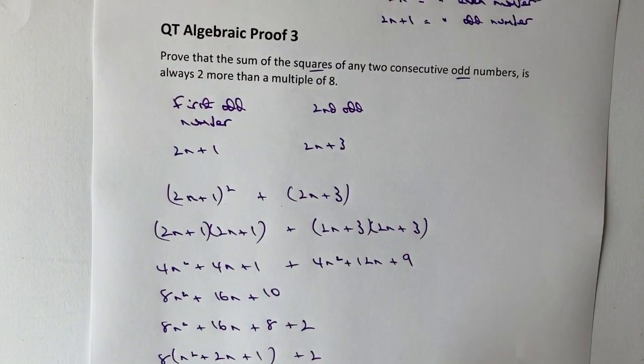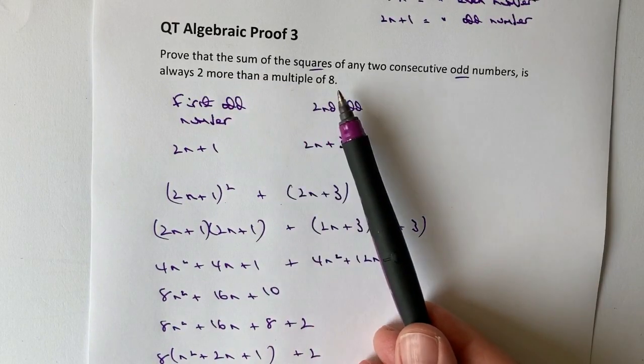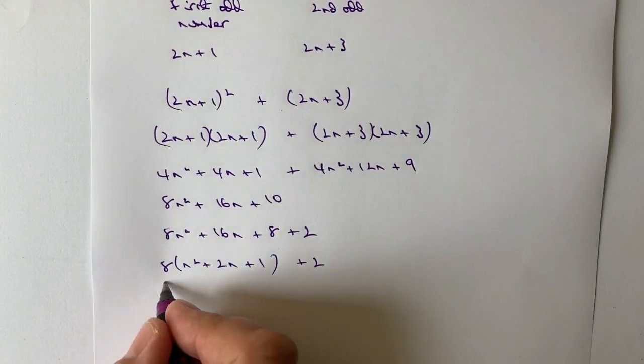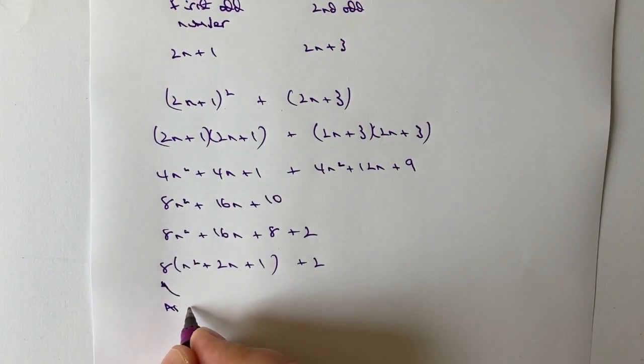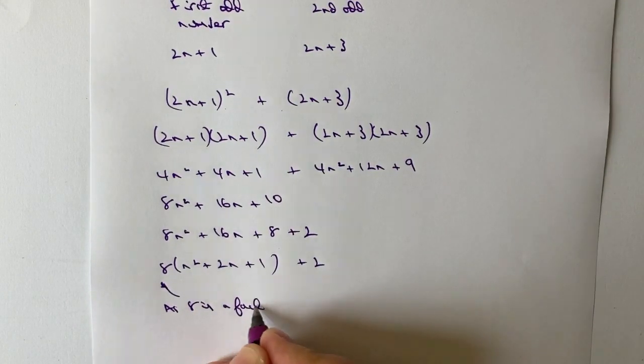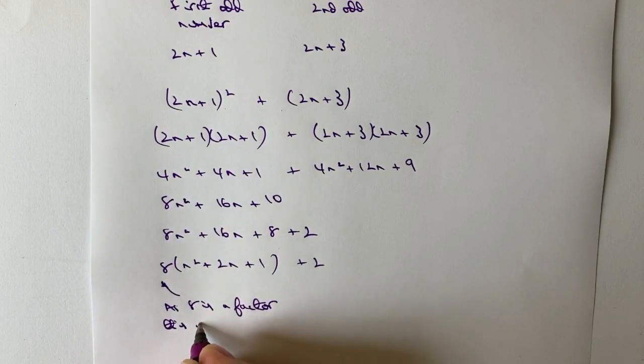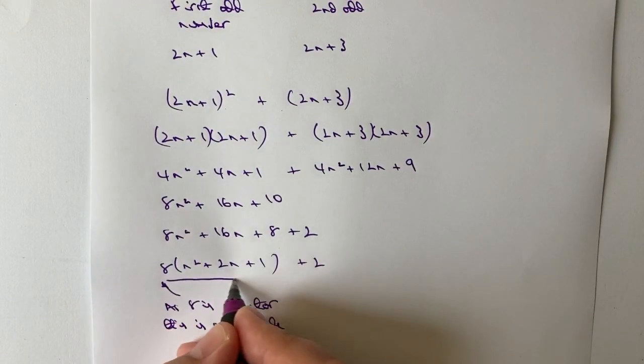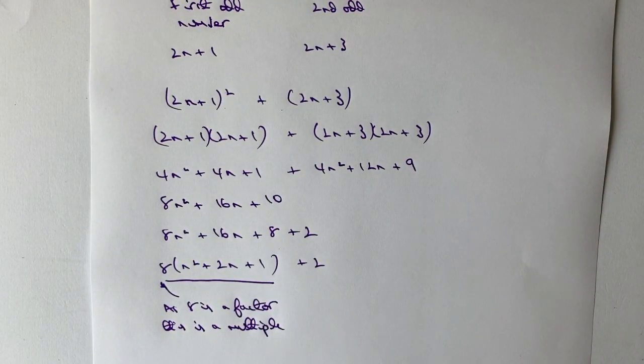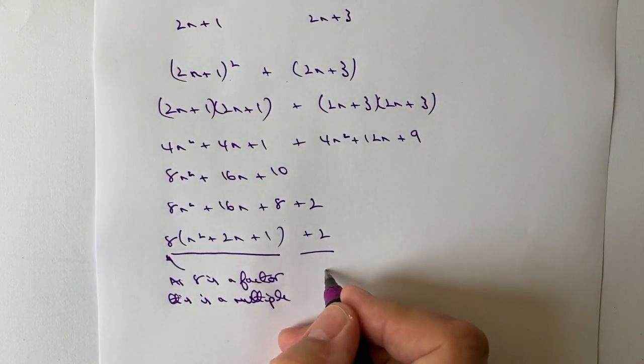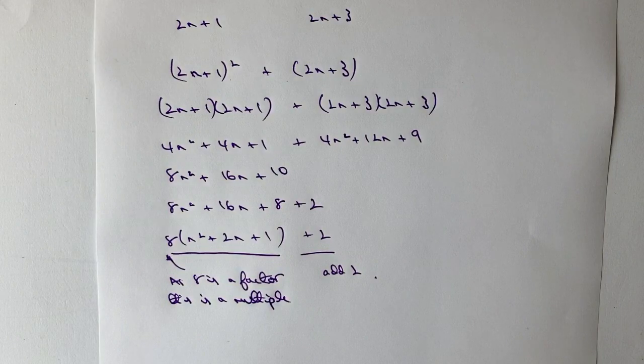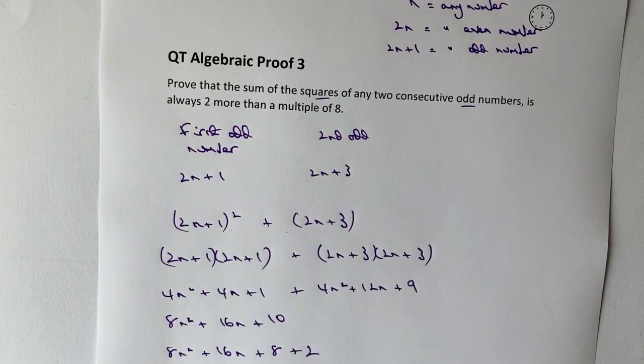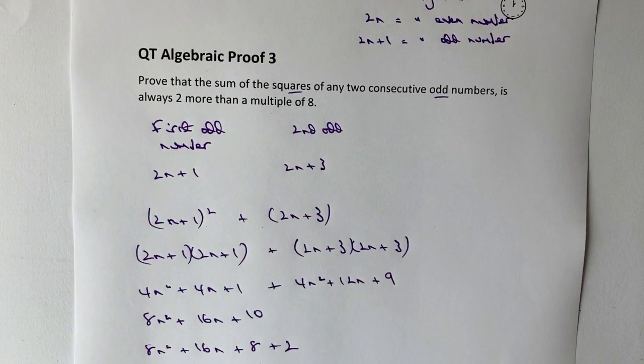Now, the reason I've done that is because I can now factorize the first three terms there for 8. So I could write that as 8 times n squared plus 2n plus 1 and then plus 2 at the end. And I'm actually answering my question. It's always two more than a multiple of eight. So what I would normally do is I would write a little sentence or something that says that as 8 is a factor, this is a multiple. So this expression here is going to be a multiple and then I'm going to add 2. And that would be sufficient to actually prove that the sum of the squares of two consecutive odd numbers is always two more than a multiple of eight.